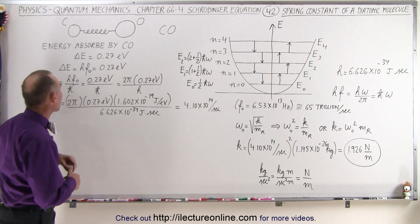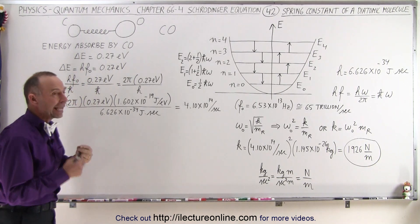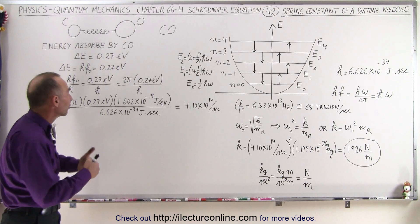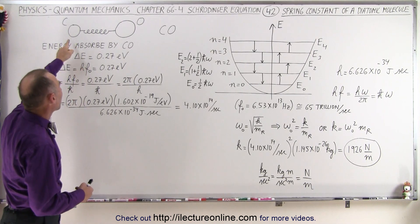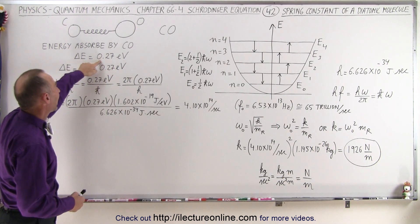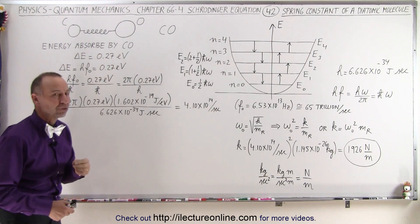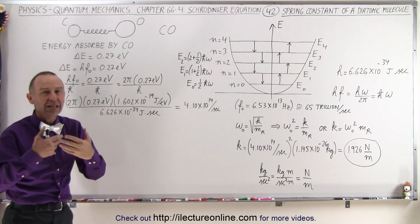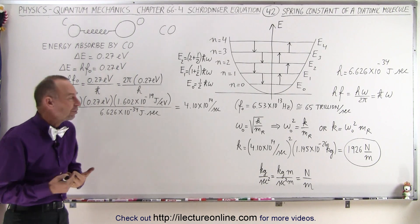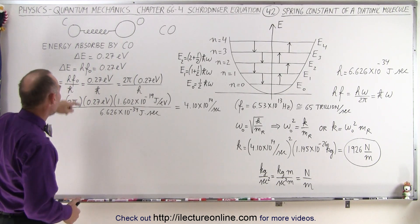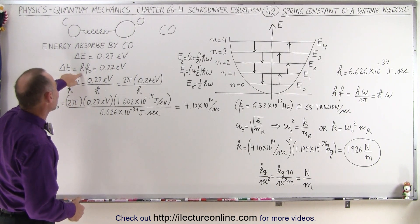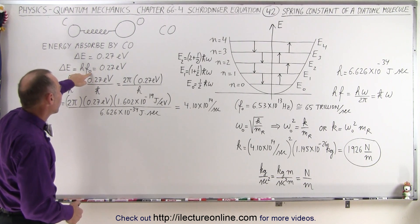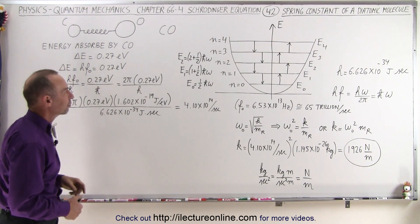Through observation we've seen that the energy frequency — the radiation that is either absorbed or emitted by a carbon monoxide molecule — has energy of 0.27 electron volts, which means that the energy absorbed or emitted is in the infrared range, below the visible light range. We know that the energy of a photon is equal to Planck's constant times the frequency of the photon, so we can set that equal to 0.27 electron volts.